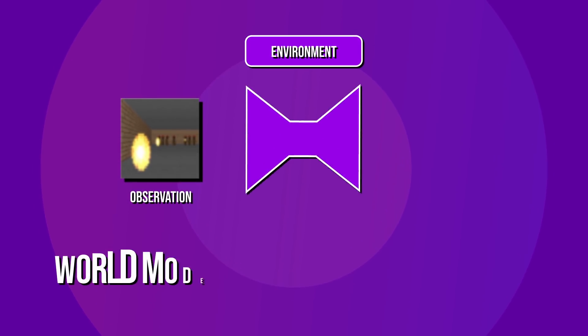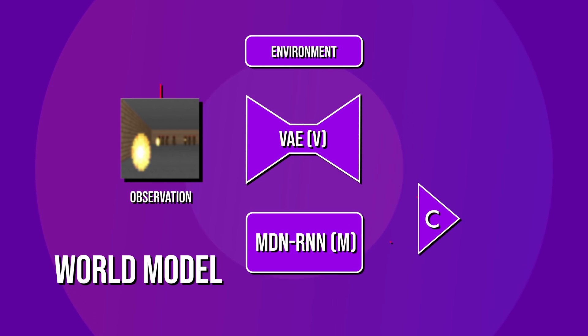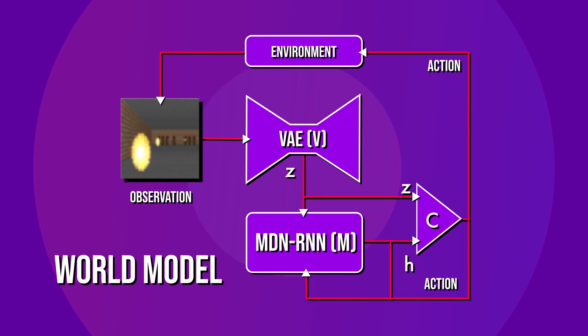The controller model is responsible for determining the next action to take in order to maximize the expected reward of the agent during a rollout of the environment. The controller is a simple single layer feedforward neural network that takes the representations from both V and M as input. The flow of the data is such that the raw observation is first processed by V. The input into C is the output of V concatenated with M's hidden state. C then outputs an action vector for motor control. M then takes the current output from V and the action as an input to update its own hidden state to be used in the next time step.